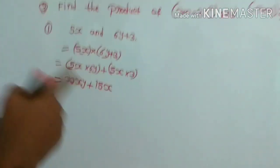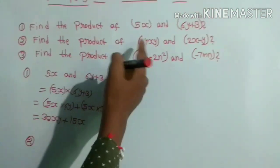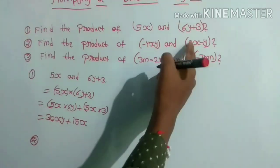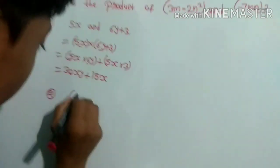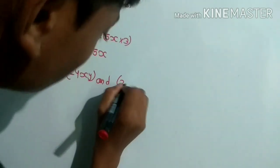We will multiply the second sum. Second sum, find the product of minus 4xy and 2x minus y. So minus 4xy and 2x minus y.